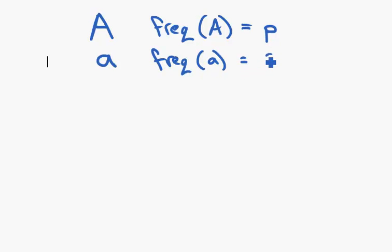They said, well hold on, why don't we say the frequency of A in the population equals P, and the frequency of small a in a population is Q. If we do that, what happens if we then do a Punnett square using P and Q?